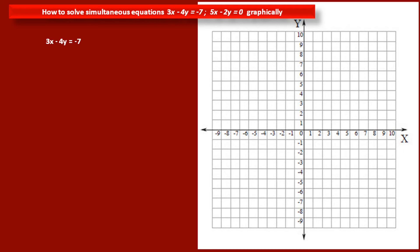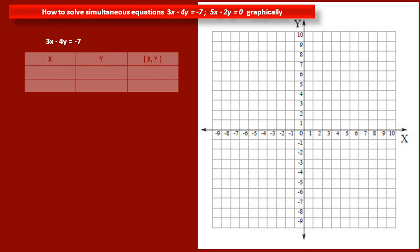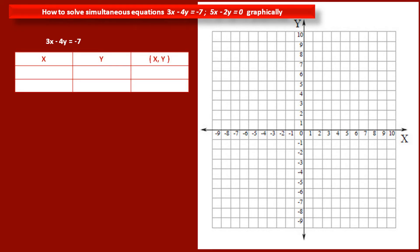The first given equation is 3x minus 4y is equal to minus 7. We have to find two points which satisfy this equation. We take one value of a variable such that the other value will be convenient to plot on the graph. Let the value of x be 3. Substituting this value of x in the equation and solving, we get the value of y as 4. So we have one point with coordinates (3, 4).